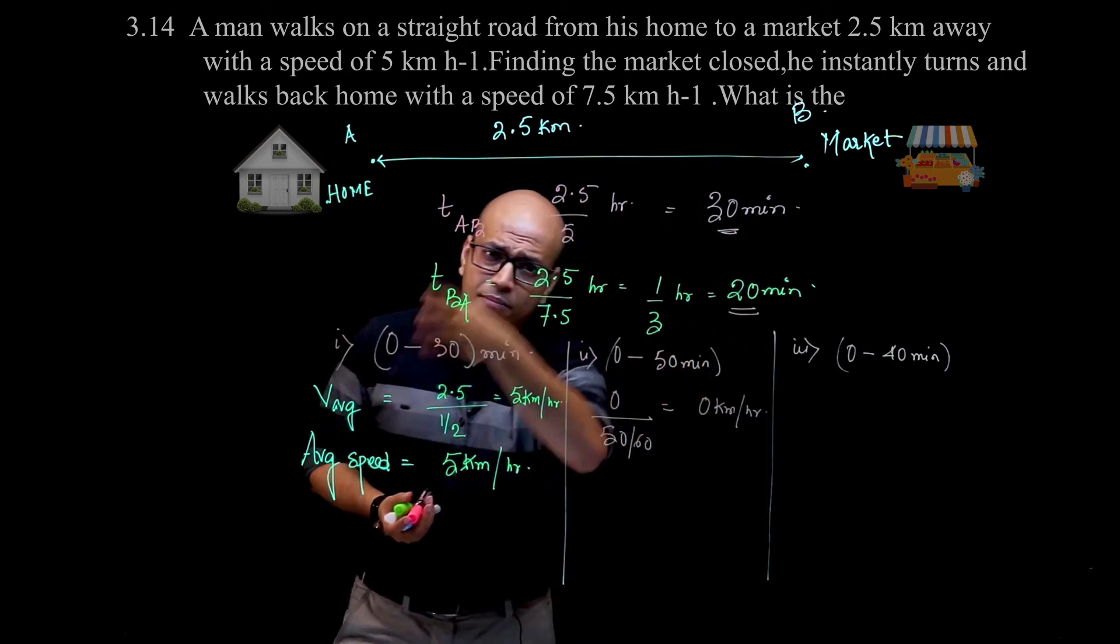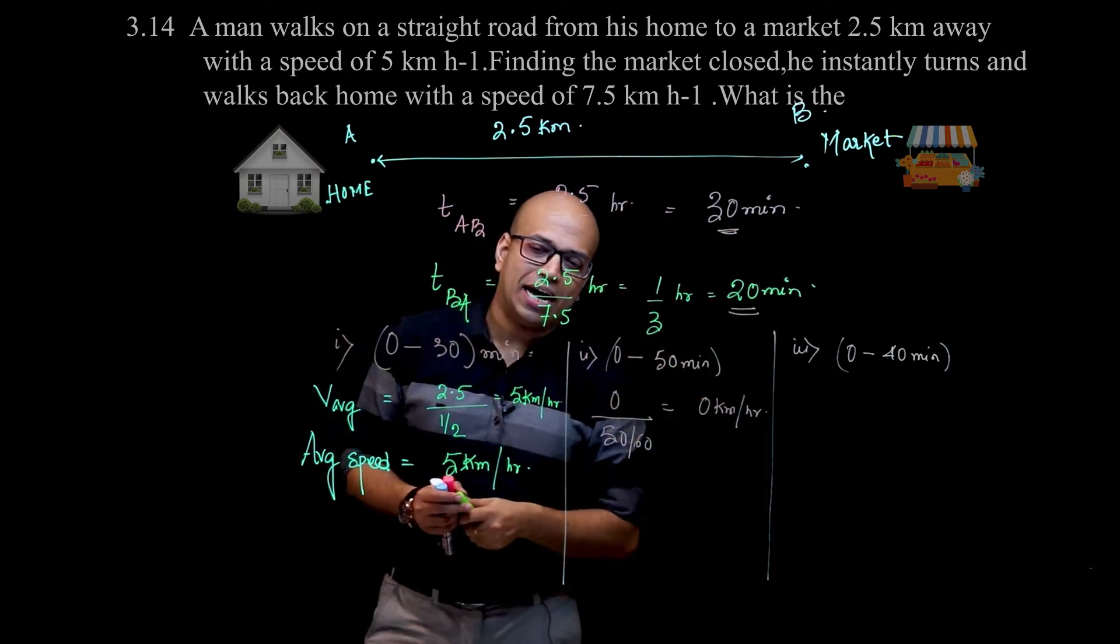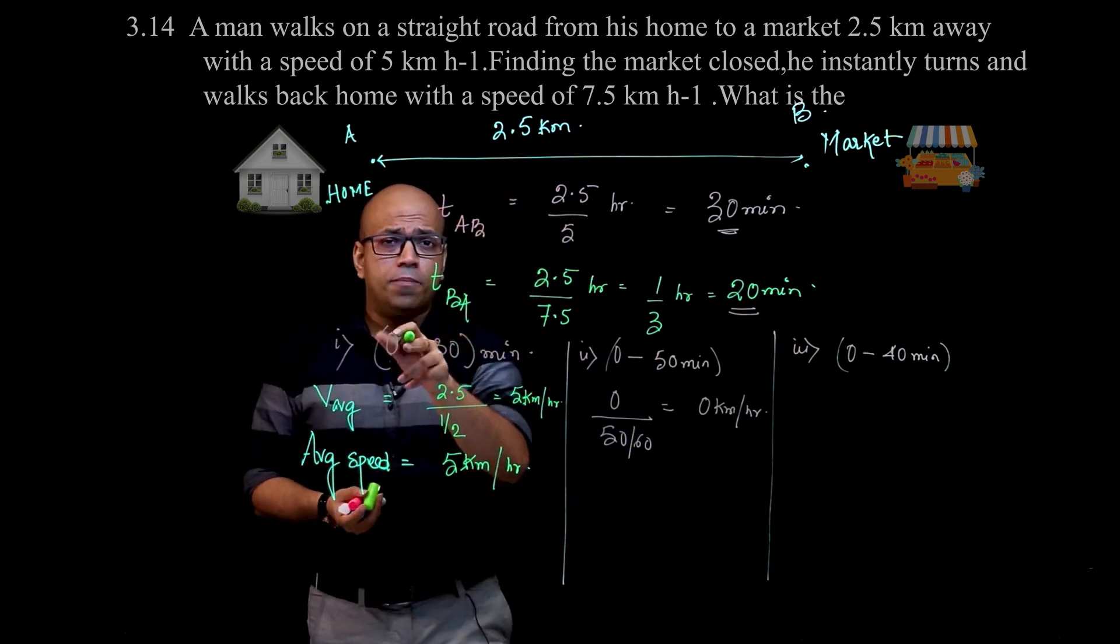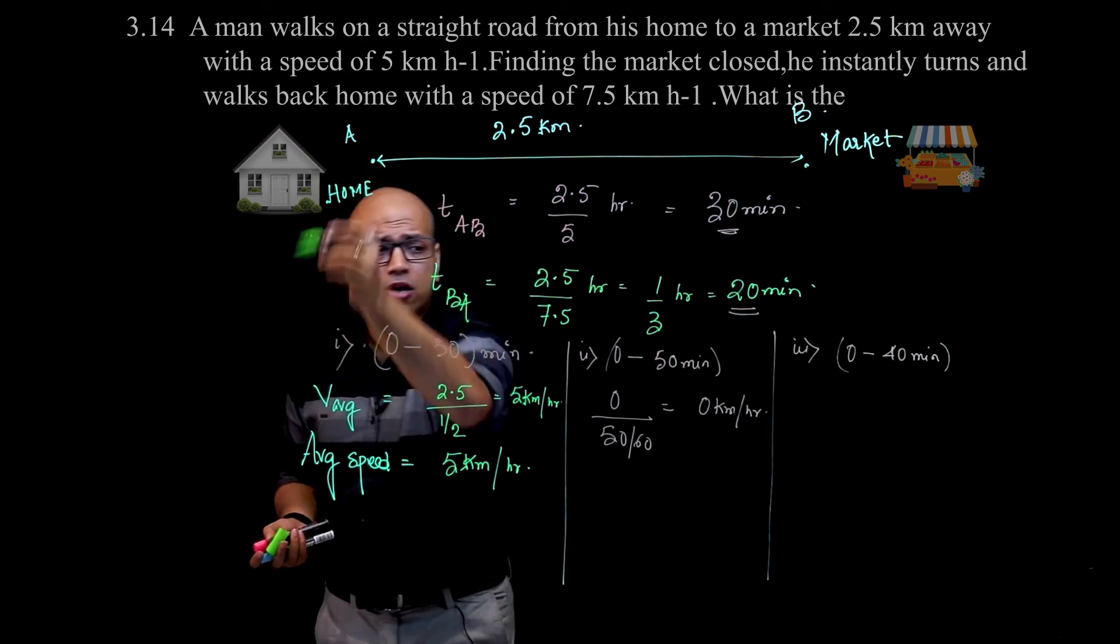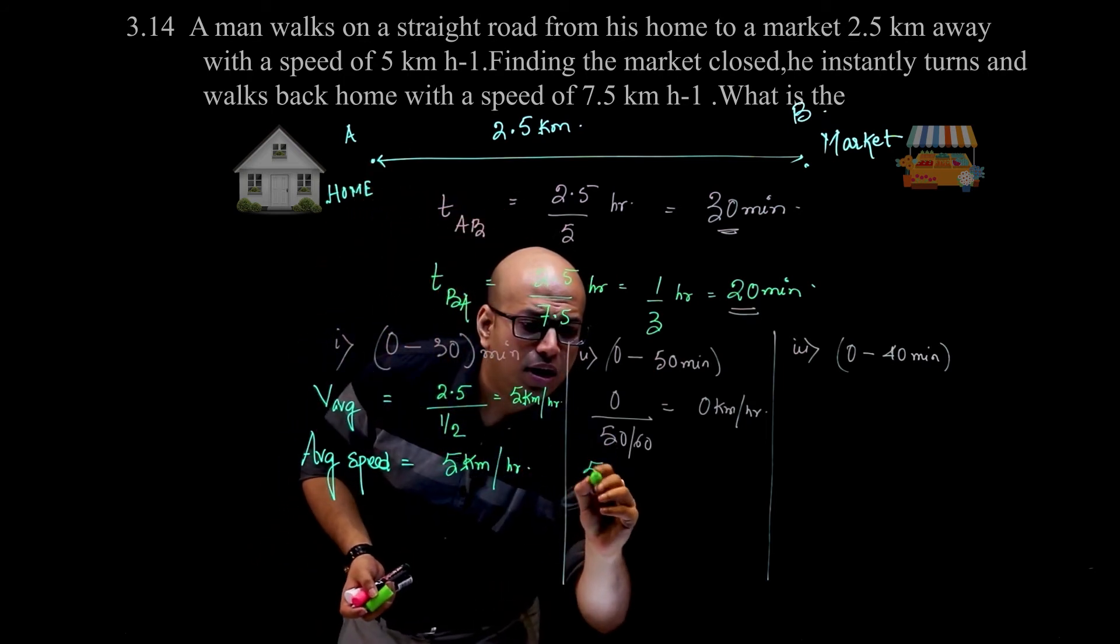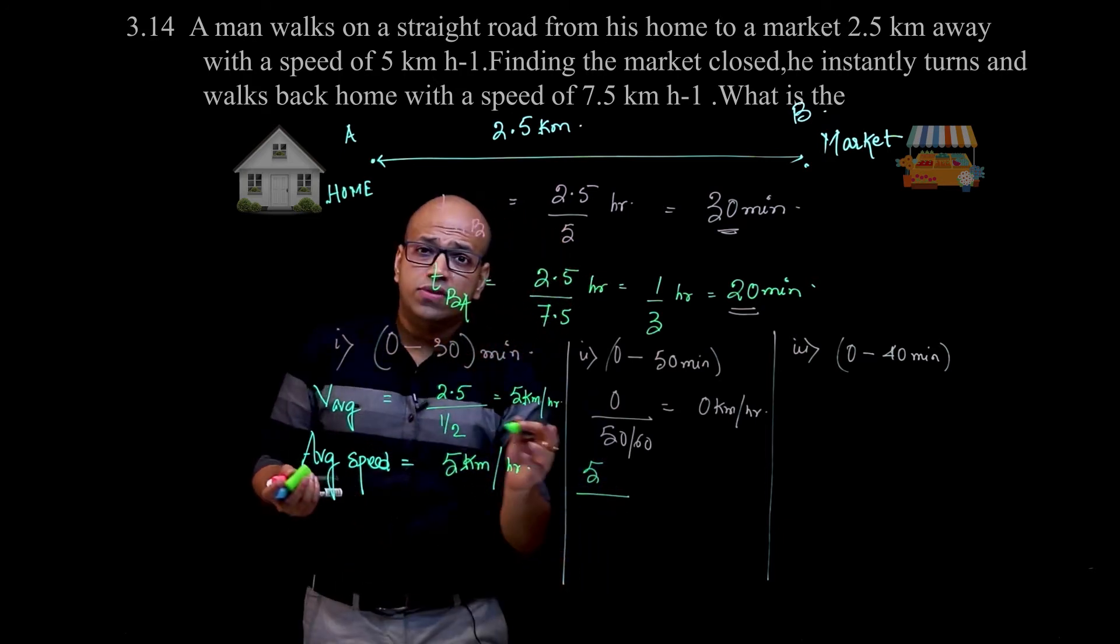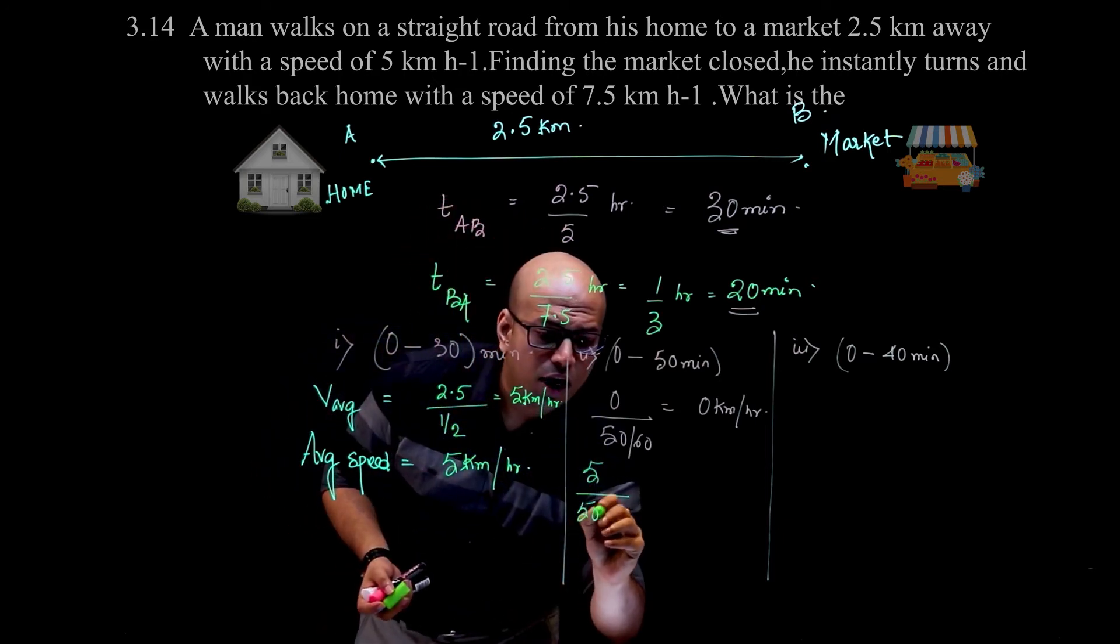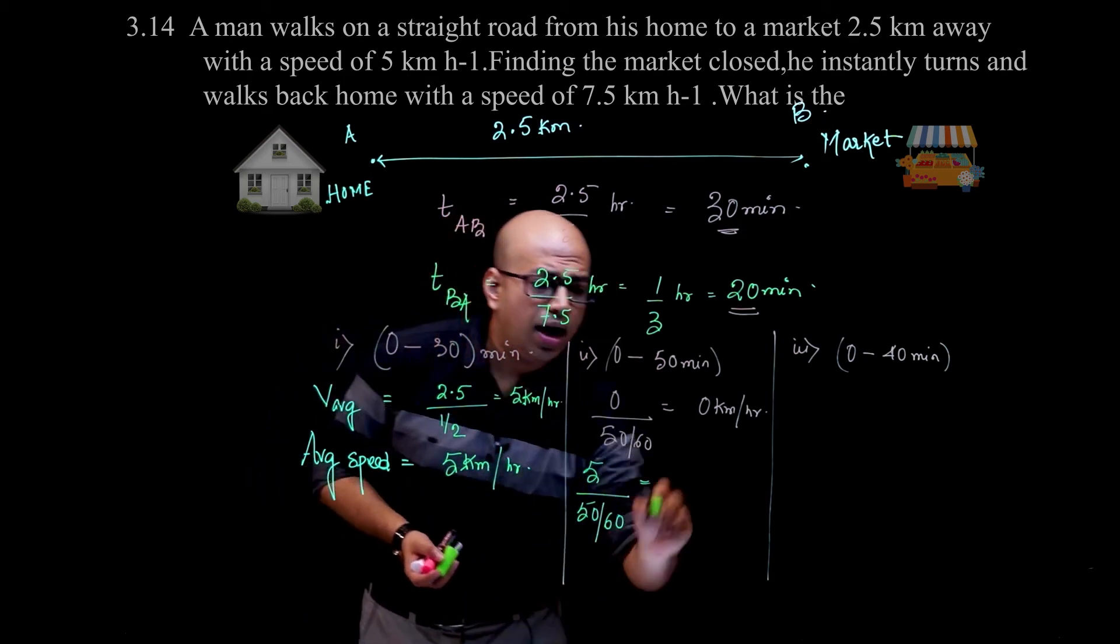If you go to the house and come back to the house, your average velocity is 0 - this might be confusing. Now what is the average speed? Total distance is 2.5 km there plus 2.5 km back, equals 5 km. Time is 50 minutes, convert to hours: 50 by 60. Total distance divided by time gives 6 kilometers per hour.